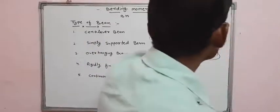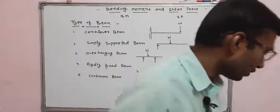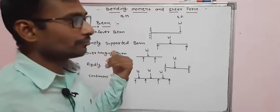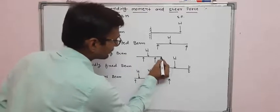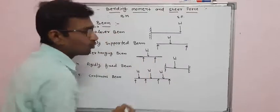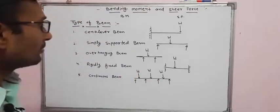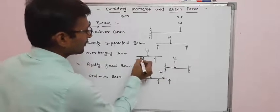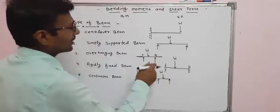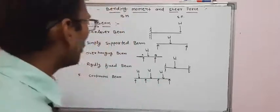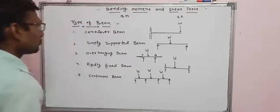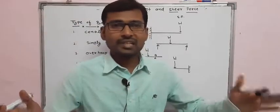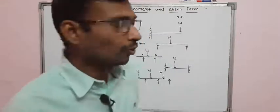In the overhanging beam, both ends of the beam extend outward beyond the supports. The beam hangs outward from the supports at points A and B, with ends hanging in the outward direction. This is called the overhanging beam.